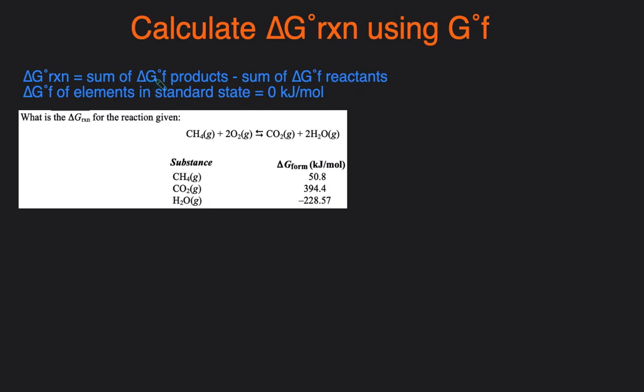The delta G formation values typically will have to be given to you and they can be found in either the back of your book or you would have to look online to find them. You just have to search up delta G formation values.